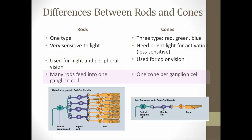Rods also have a different way of feeding into the ganglion cell. A bunch of rods feed into fewer bipolar cells, and those bipolar cells feed into one ganglion cell. So if a photon hits one rod, it causes an action potential in the same ganglion cell as if a different rod got hit. Our brain doesn't know which rod was actually hit, so rods don't provide very clear vision — it's more fuzzy.